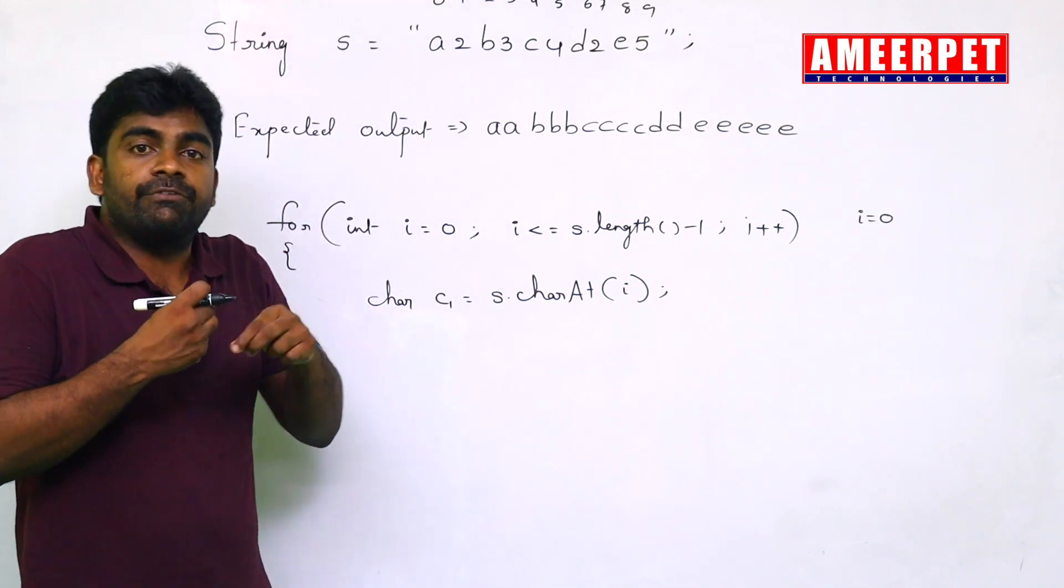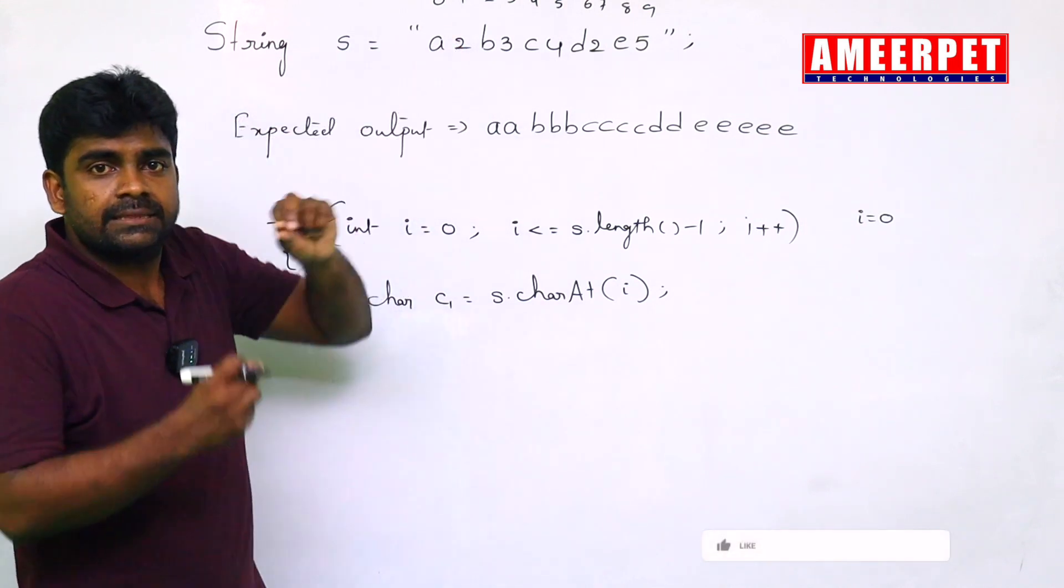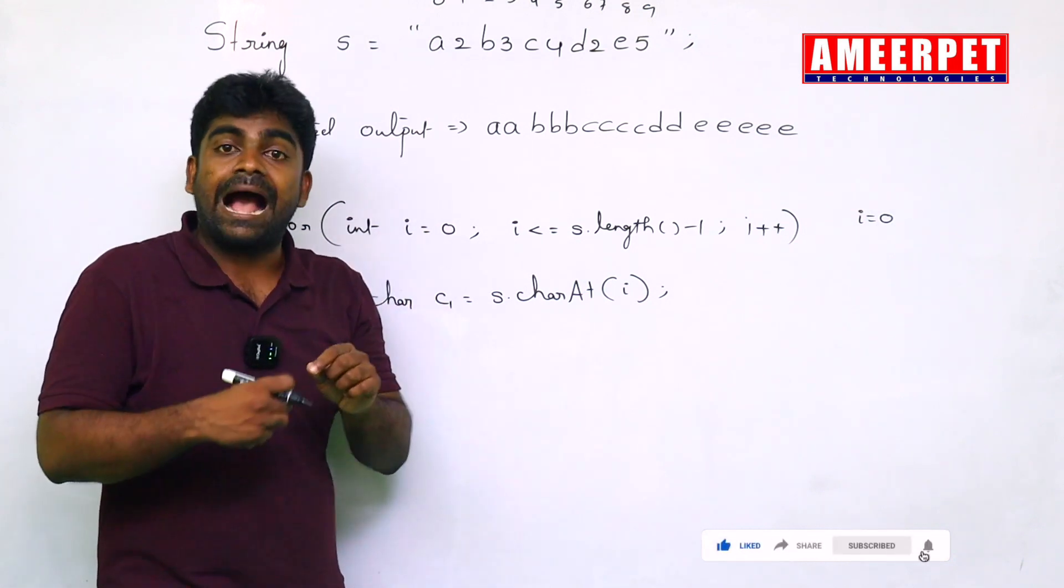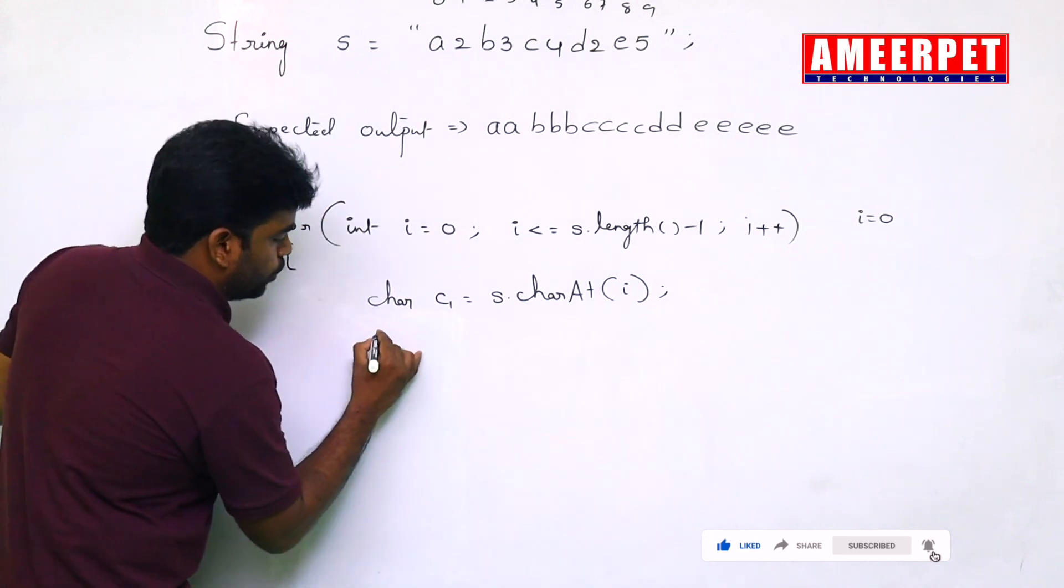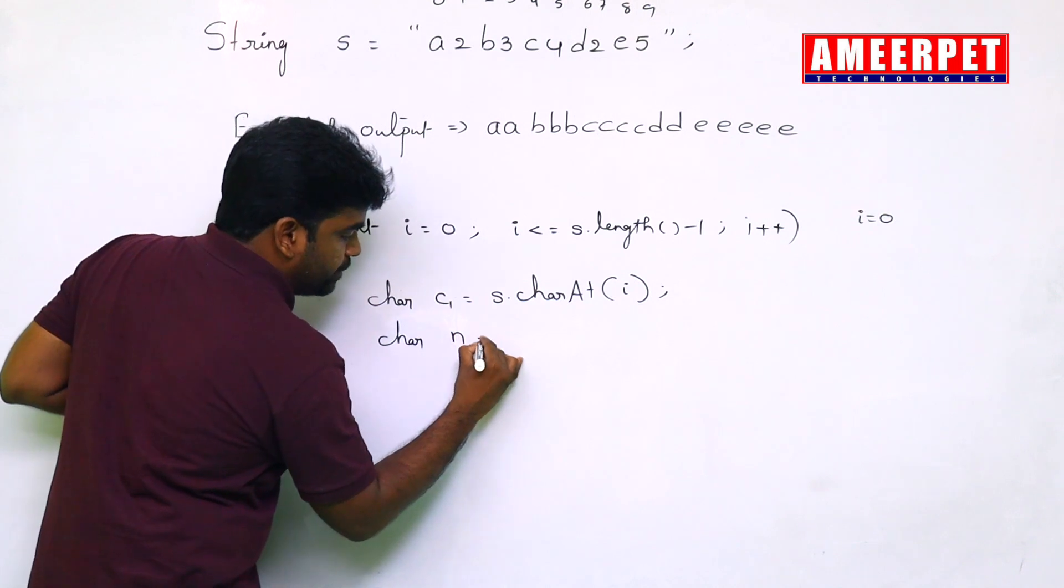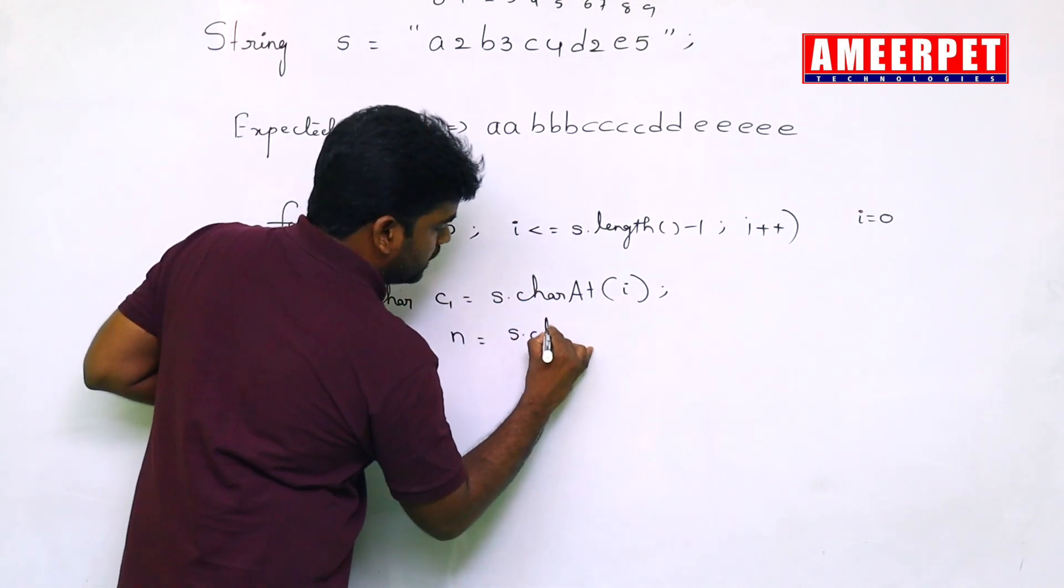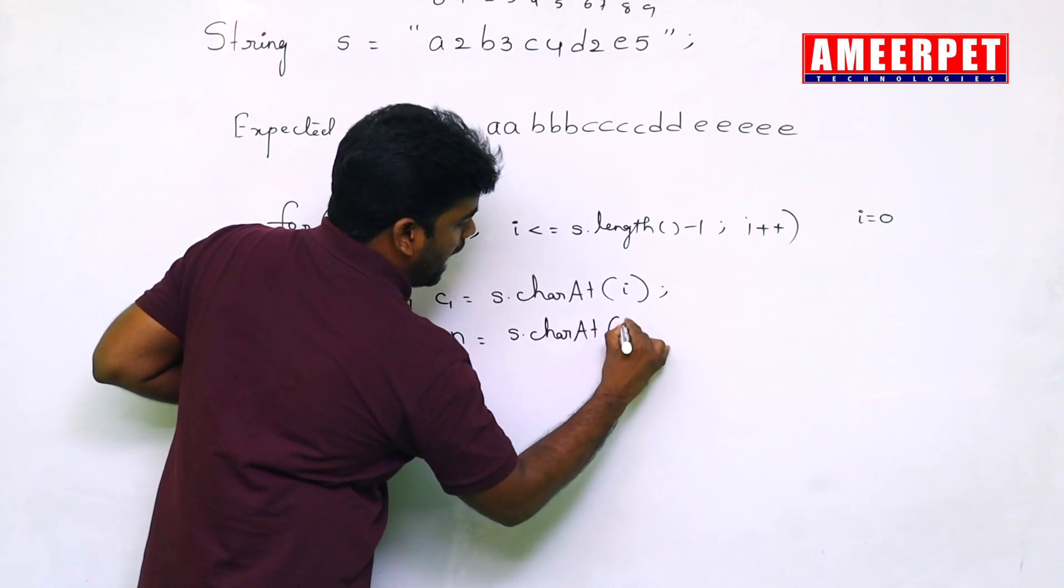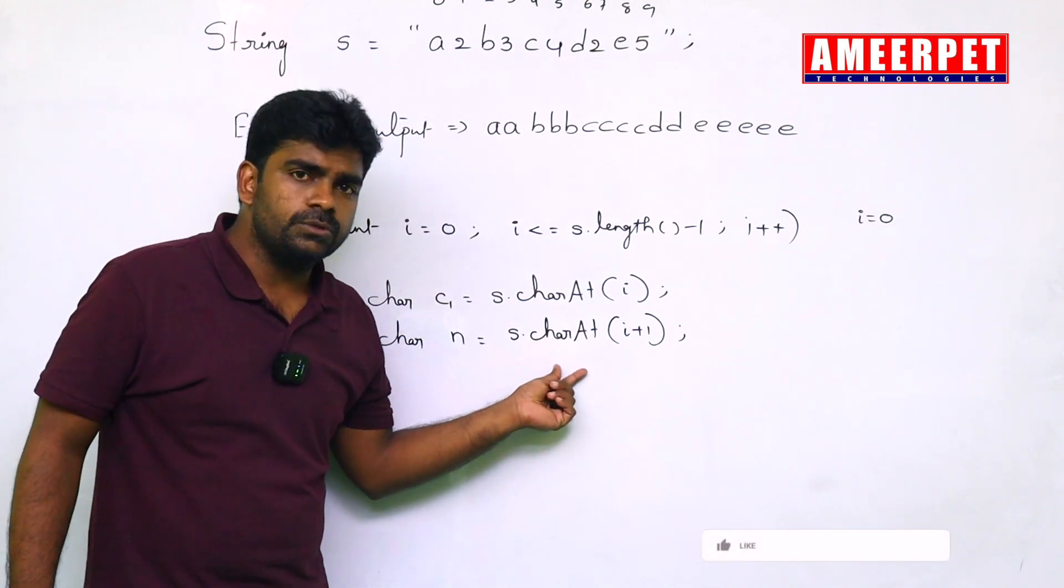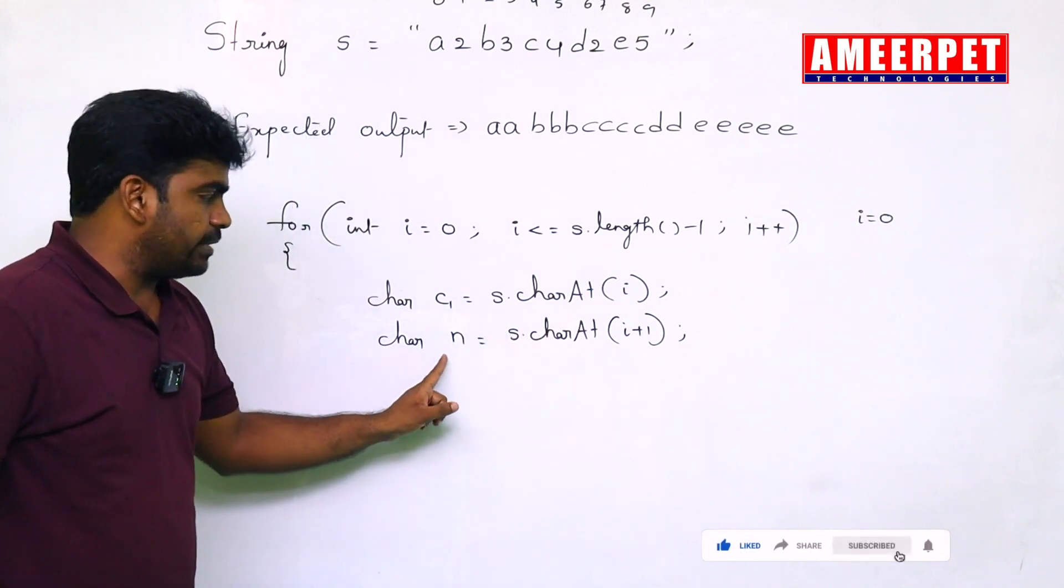Next, this character, we need to display how many times? Two times we need to display. That is the next character, i plus 1 character. The next character is n times we have to repeat, n times S dot charAt of i plus 1. i value 0, 0 plus 1 value 1, so that it will give 1.